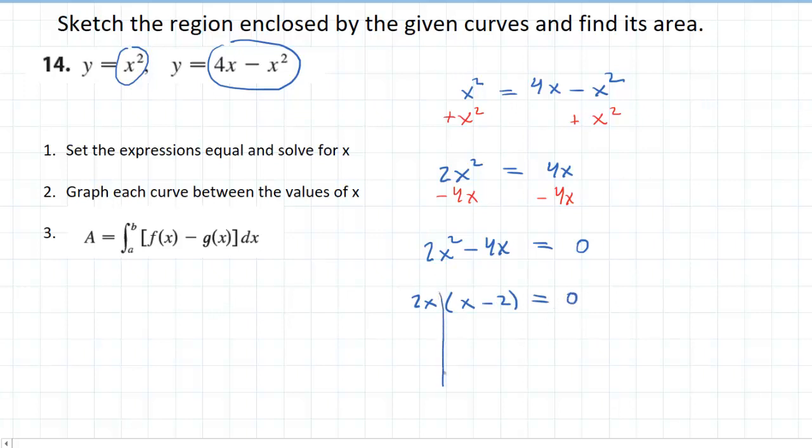And then once we've factored it, we want to set each of the factors equal to 0. And then we'll solve each equation for x. So in this case, we'll divide both sides by 2 and we get x equals 0. In this case, we'll add 2 to both sides and we'll get x equals 2.